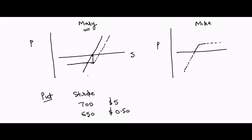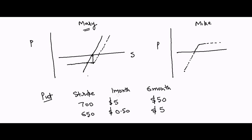That's for one month. For a six-month expiry, it's more likely the stock moves farther in either direction, so the premium at $700 might be $50 and at $650 it might be $5. The premium is higher because there's more time for the stock to move. So the premium depends on both the expiry date and the strike price.